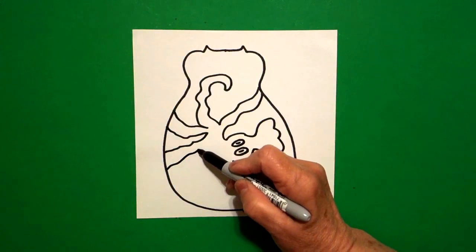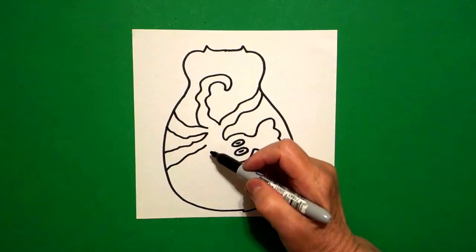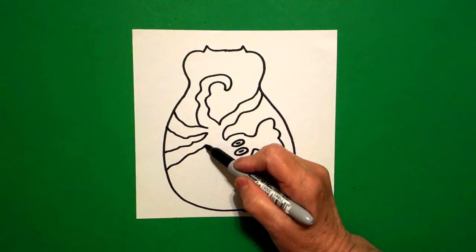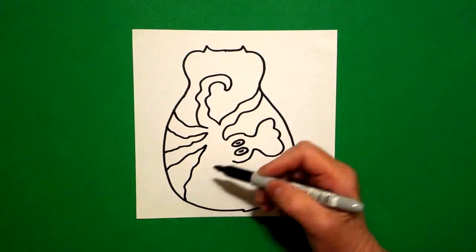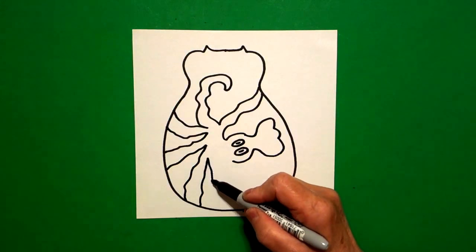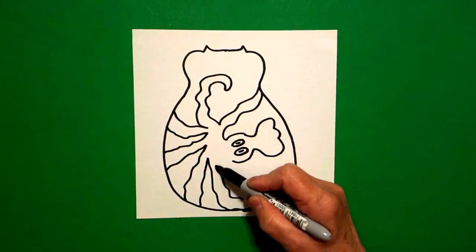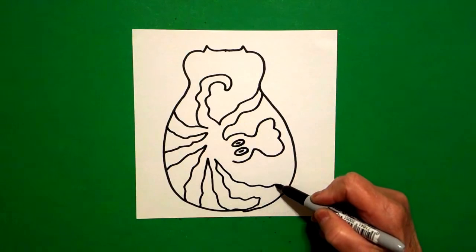Now I got to count: one, two, three, four. So I got to do four more legs. It is an octopus. Wavy line down off the page, bring it back up. So that's five, six, seven off the page, bring it back up.